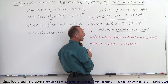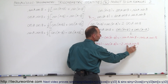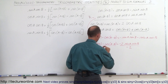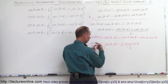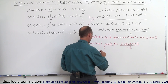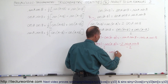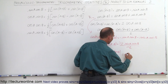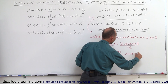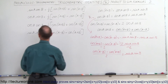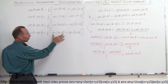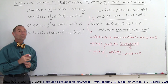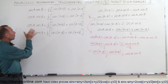Now we divide both sides by negative 2. The minus sign turns the left side around, so we end up with cosine of A minus B minus cosine of A plus B, the whole thing divided by 2, equals sine A times sine B. Sure enough, sine of A times sine of B equals one-half times cosine of A minus B minus cosine of A plus B, which is exactly the fourth equation that converts a product to a sum.